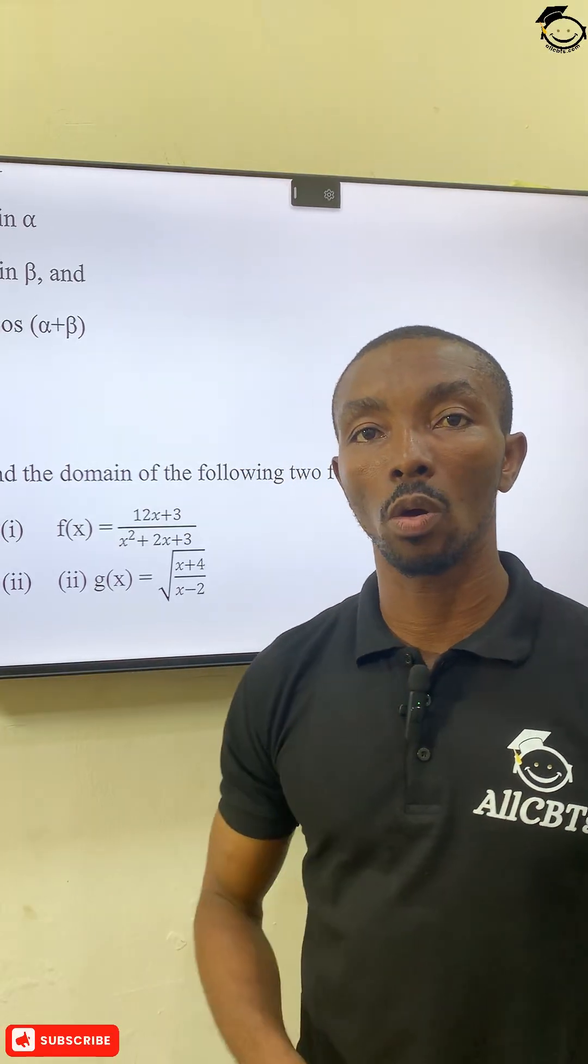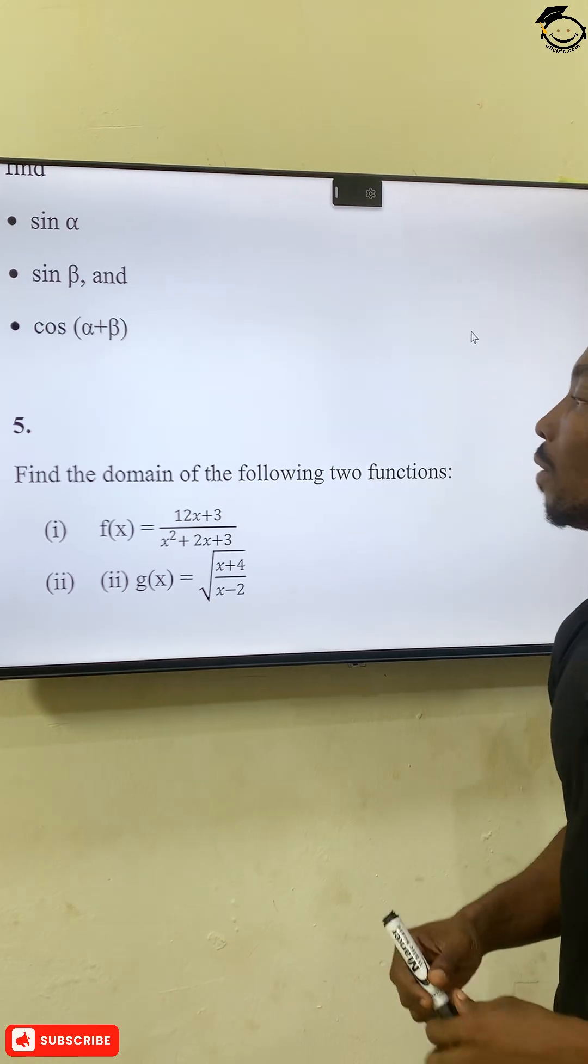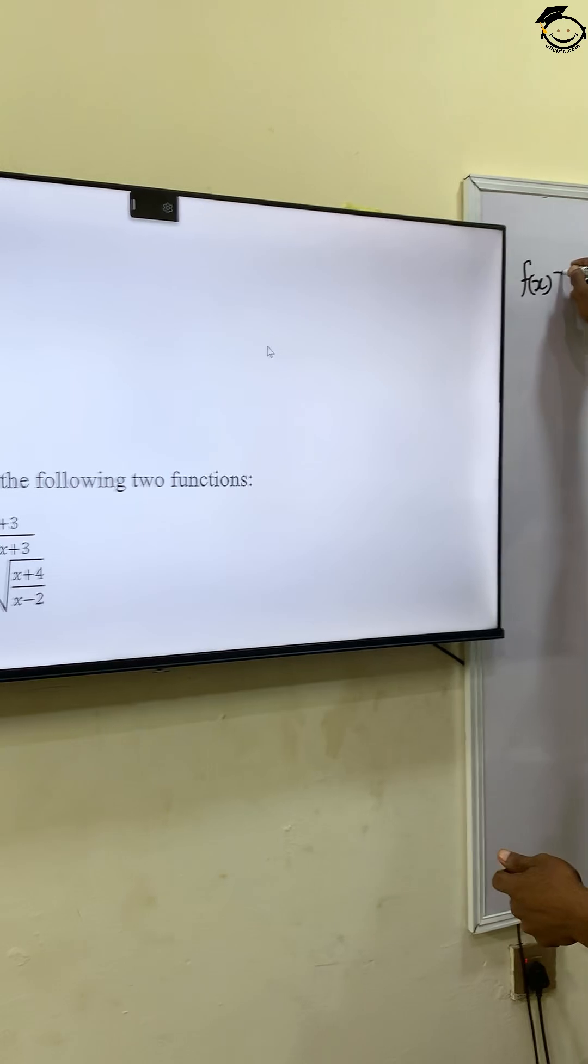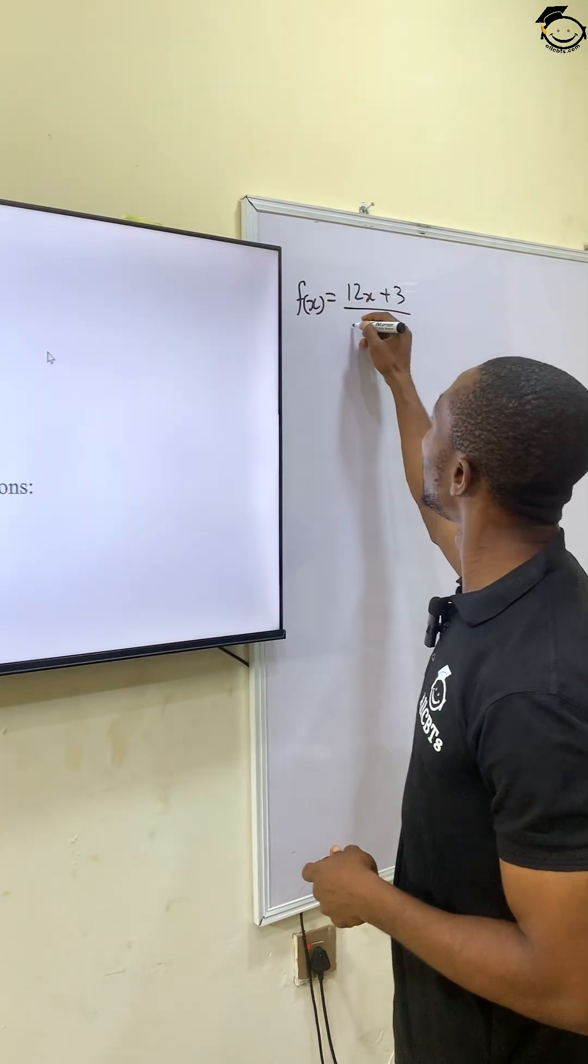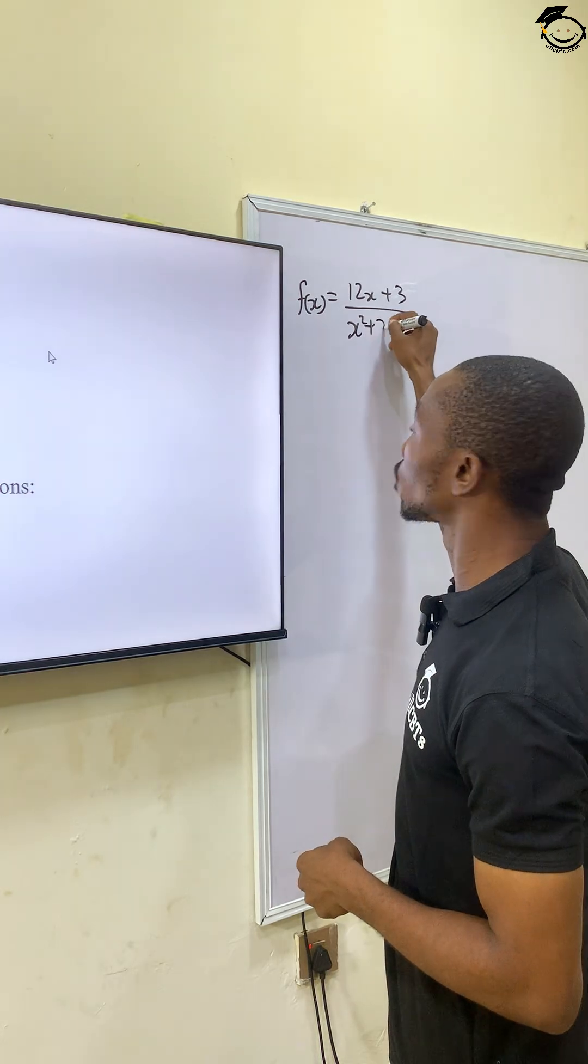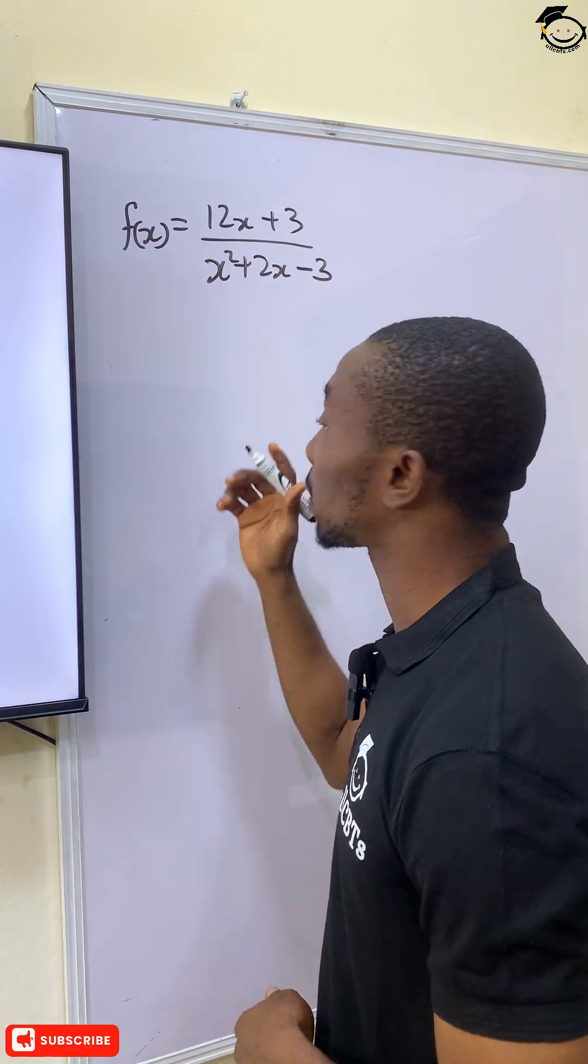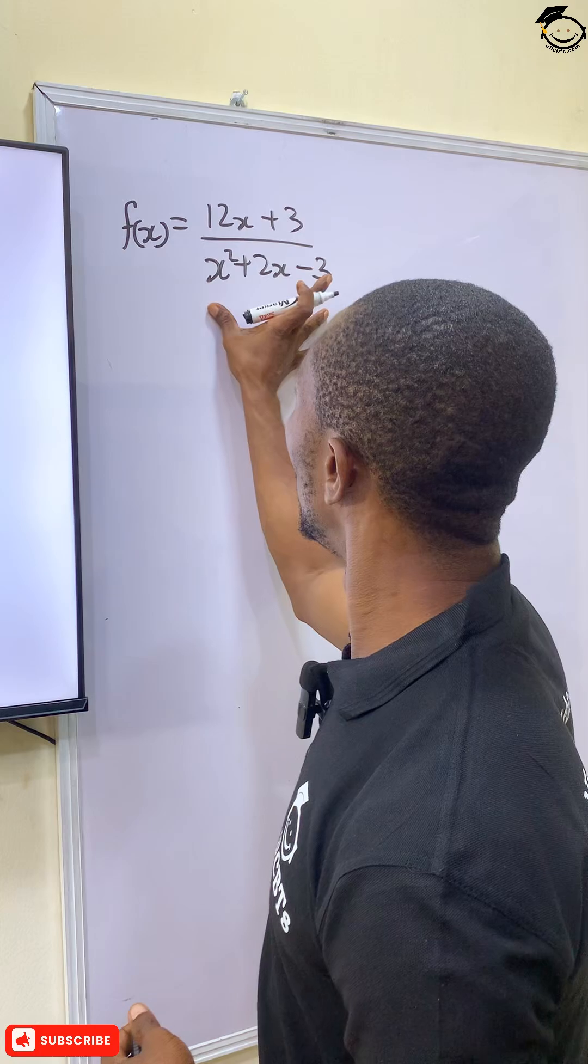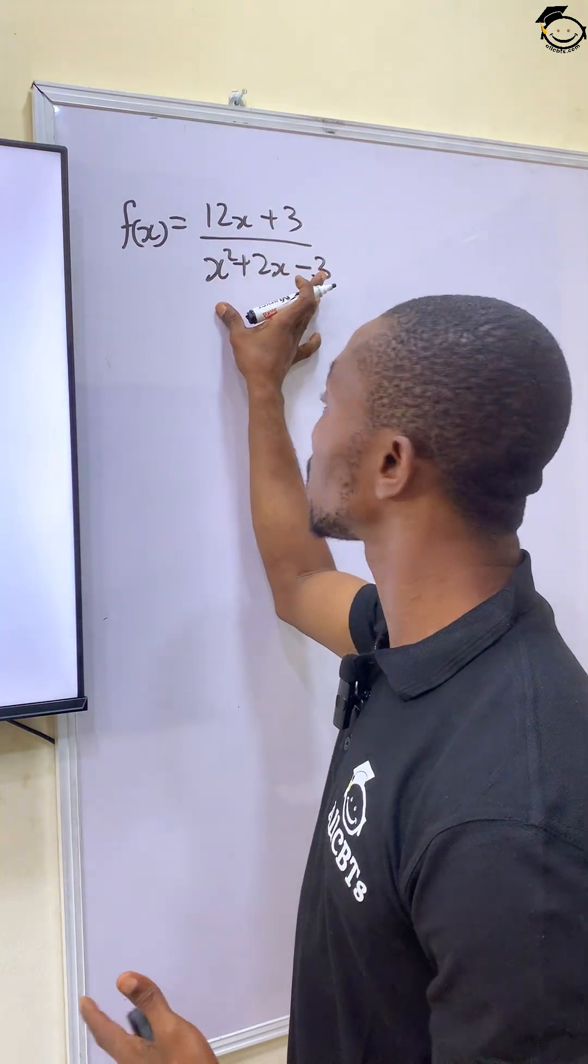Alright guys, let's solve this Math 101 question together. It says find the domain of the function f of x equals 12x plus 3 all over x squared plus 2x minus 3. For us to solve this question, it is important to notice that the domain will be all real functions except the roots of this equation.